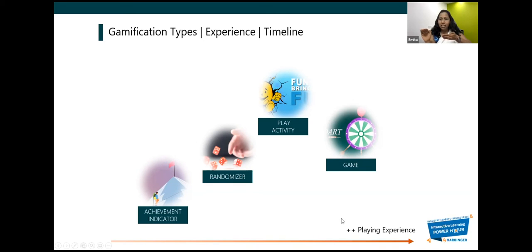Now let us see how it is placed on the playing experience. The below line you see indicates the playing experience where the game and play activity is highest on the playing experience. Let us see how these different ideas work on the production timeline. If you see the randomizer or the achievement indicators kind of gamification elements are very low on the production time, very less time to produce those.